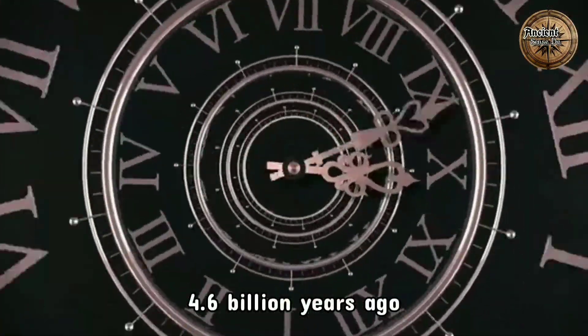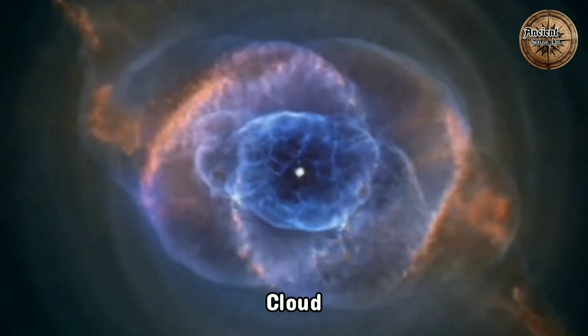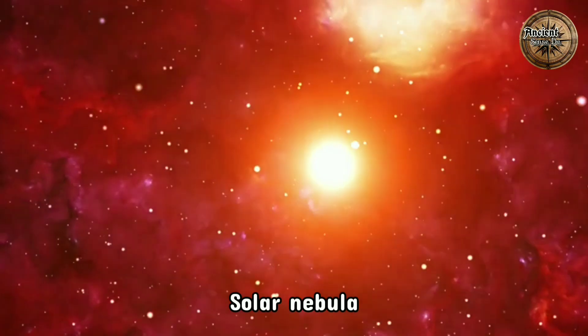The sun formed around 4.6 billion years ago in a giant spinning cloud of gas and dust called the solar nebula.